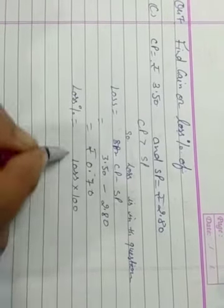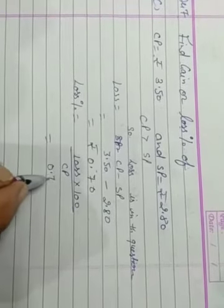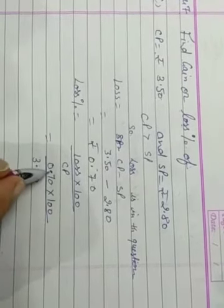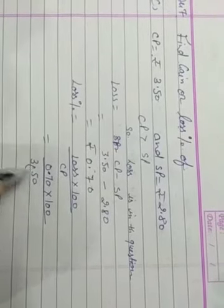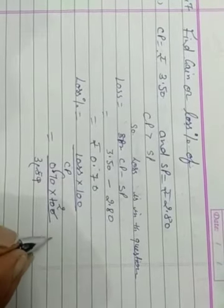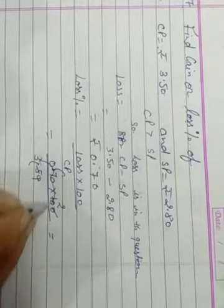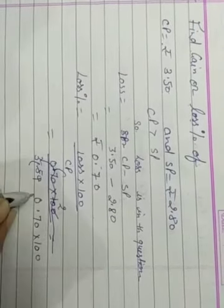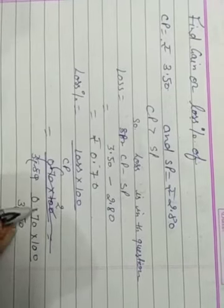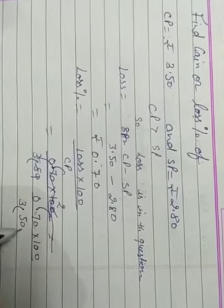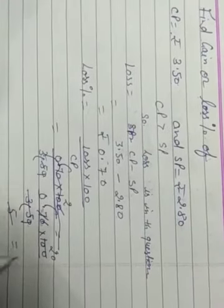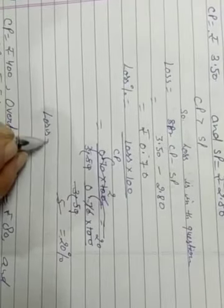Now find the loss percent. Loss percent is equal to loss into hundred upon CP. Loss is equal to 0.70, hundred, CP is equal to 3.50. After decimal two places, decimal in two places, we can remove the decimals. Now 0 cut by 0, 5 to the 10, 70. 0.70 per 3.50. Decimal cut by decimal because after decimal two digit here and two digit here. Now zero cut by zero, seven fives are thirty five, five twos are ten. Zero zero. How many percent? Twenty percent. Loss is equal to twenty percent.